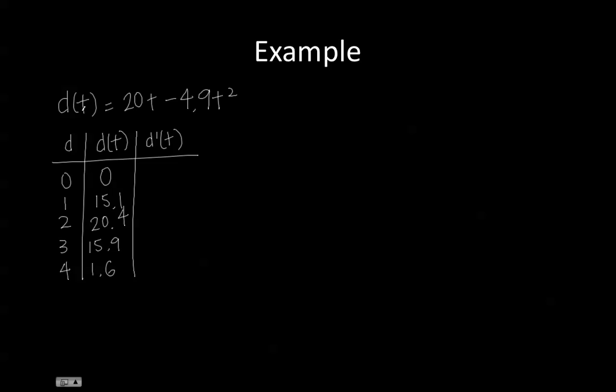And the velocity is the derivative of the displacement function. So v(t) equals the derivative of d(t), which is 20 minus 9.8t, because the derivative of a constant times a function is equal to the derivative of the constant times the derivative of the function, which is 20 here. And then over here,